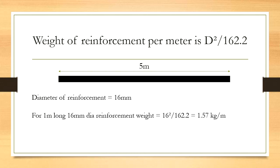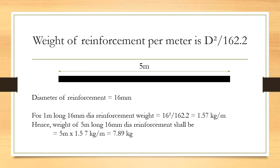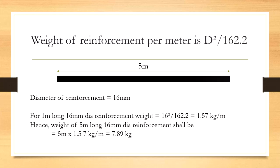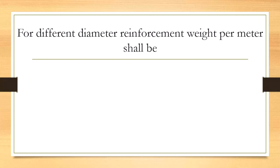divided by 162.2, that comes out to be 1.57 kg per meter. So for a 5 meter long 16 mm diameter reinforcement, weight shall be 5 meter into 1.57, that comes out to be 7.89 kg. For different diameter reinforcement,